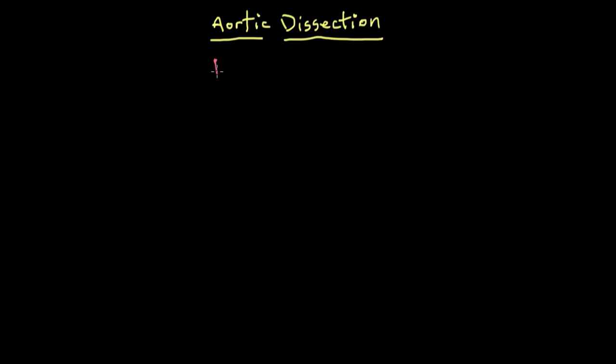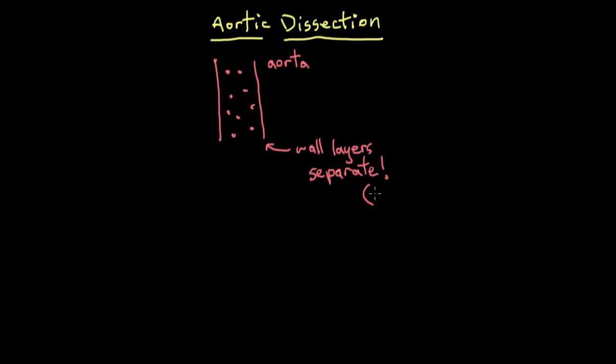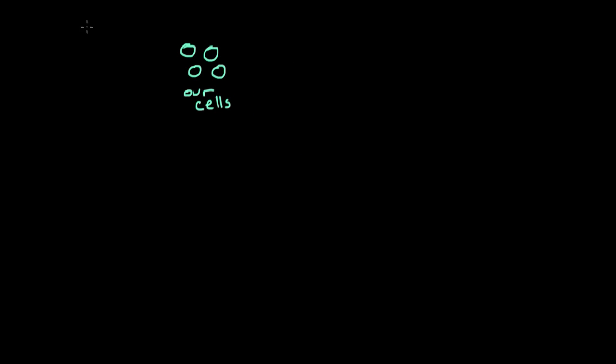An aortic dissection is a life-threatening condition where there's a separation of the layers in the wall of the aorta. To understand this, let's go over some background information. We know that every cell in our body needs oxygen to survive, and it's really important that our cells have constant access to oxygen — many of our cells can start to die if they're deprived of oxygen for even a few minutes.